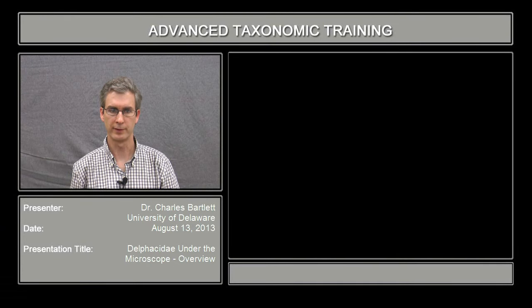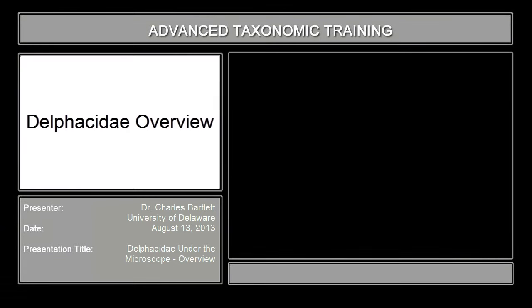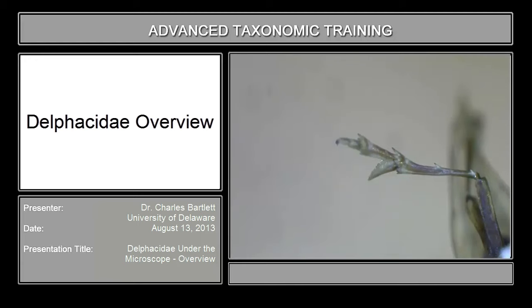I'm Charles Bartlett from the University of Delaware. So you have some specimens in front of you, and what we're going to do now is work with the key to genera of del Fasidae north of Mexico. This is a key that is not yet published, but it's part of a monograph that's been accepted for publication and should be out later this year.